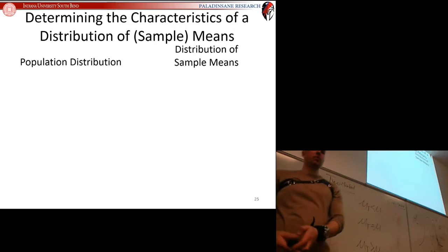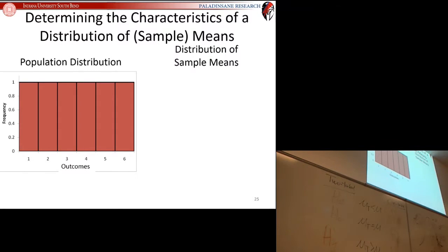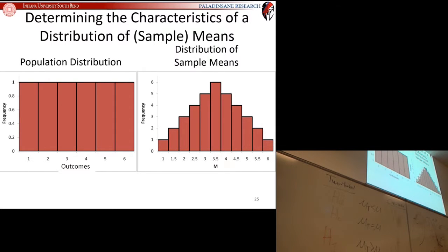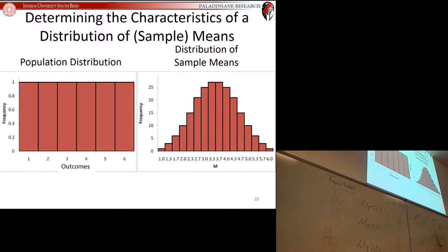Just one more time: your population distribution is only the same as your distribution of sample means when your sample size is 1, which never happens in typical psychology studies. You have more than one subject—10, 20, 30 subjects. Once you go to more than one subject, your distribution of sample means is different than your population distribution. So keep that dichotomy in mind.